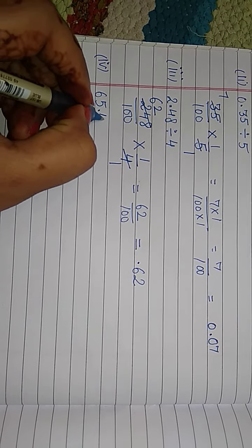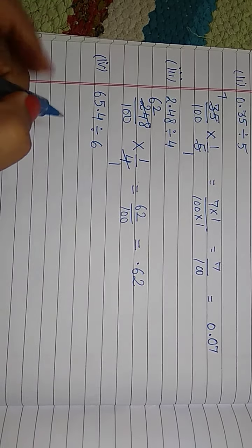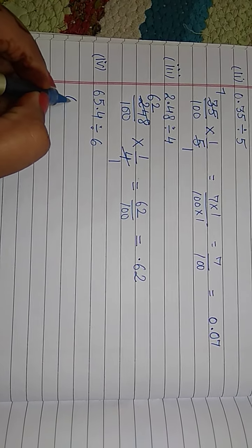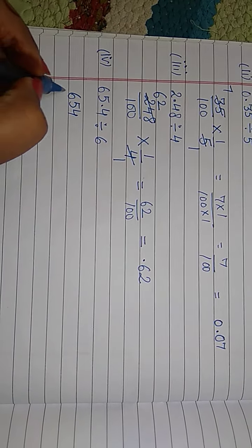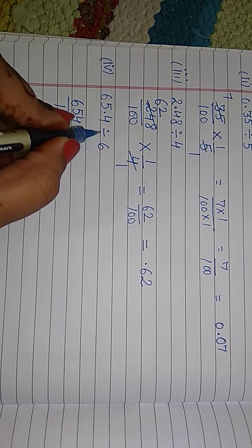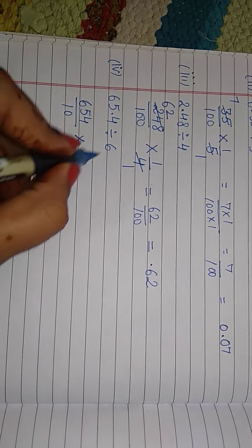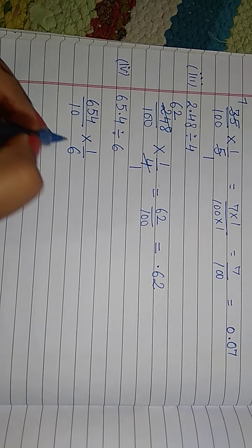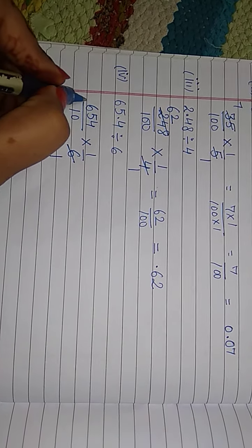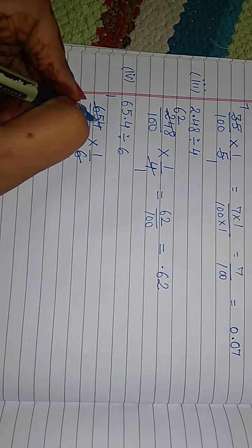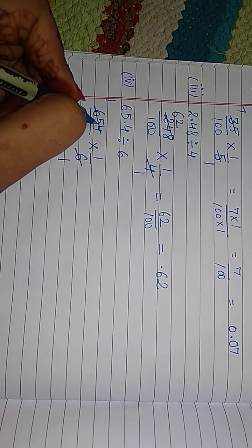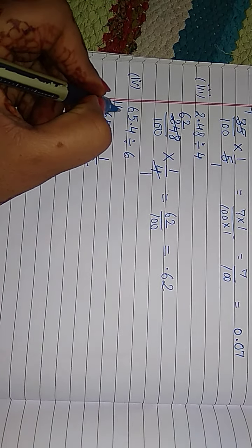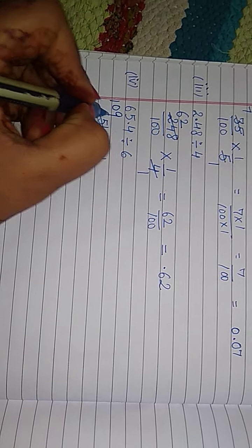Next is 4th part. 65.4 divided by 6. Same as it is. Remove decimal. Over 10. Division sign changes to multiplication. Take reciprocal of 6. That is 1 by 6. Here, 6 1 the 6. 6 1 the 6. Now, we need 2 digits. Put 0. 6 9 the 54.